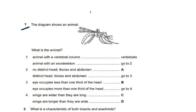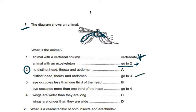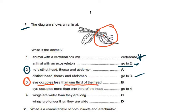Now for some MCQ questions. Question one: the diagram shows an animal — use the key to identify it. An animal with a vertebral column would be a vertebrate, but this is not a vertebrate. It has an exoskeleton, so it's an insect. Going to step two: it has a distinct head, thorax, and abdomen. Going to step three: the eye occupies less than one third of the head, so the answer is B.